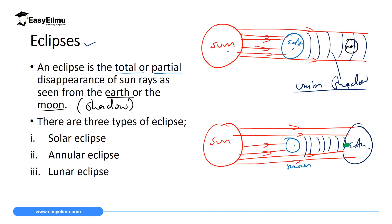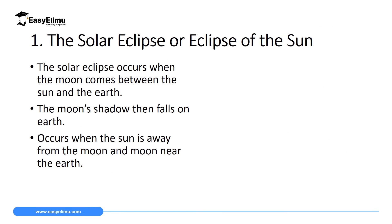We have three types of eclipses to consider: the first is a solar eclipse, the second is an annular eclipse, and the third is a lunar eclipse. The solar eclipse, sometimes called the eclipse of the sun, occurs when the moon is in between the sun and the Earth. If the moon, which is opaque, blocks the rays of light from reaching the Earth's surface, we receive the shadow of the moon on the Earth's surface.